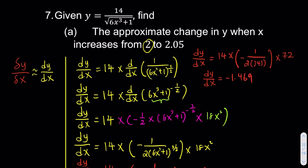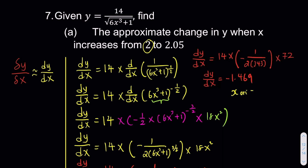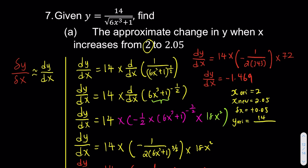Now we find a few more pieces of information. The original x is 2, the new x is 2.05, so delta x is positive 0.05. We also need to find y original. y original is 14 over the square root of 6 times 2³ plus 1 — 2 cubed is 8 — so 14 over the square root of 49, which is 14 over 7. So y original is 2.